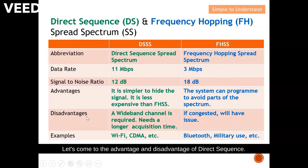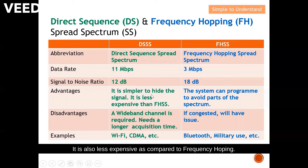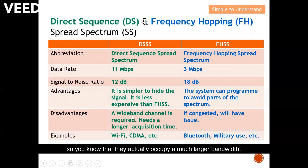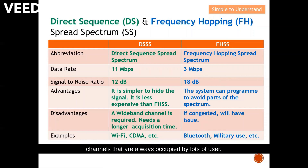For the advantages and disadvantages: direct sequence is much simpler and it is easier to hide the signal — sometimes the signal sits underneath the noise level, so you can transmit without others knowing. It is also less expensive compared to frequency hopping. The disadvantage is that a wider band channel is required, meaning you need more bandwidth and therefore potentially longer transmission time. For frequency hopping, the system can be programmed to avoid parts of the spectrum — for example, channels that are always congested — giving a better chance of delivering the message. The disadvantage is that if the spectrum is congested, you will have issues.